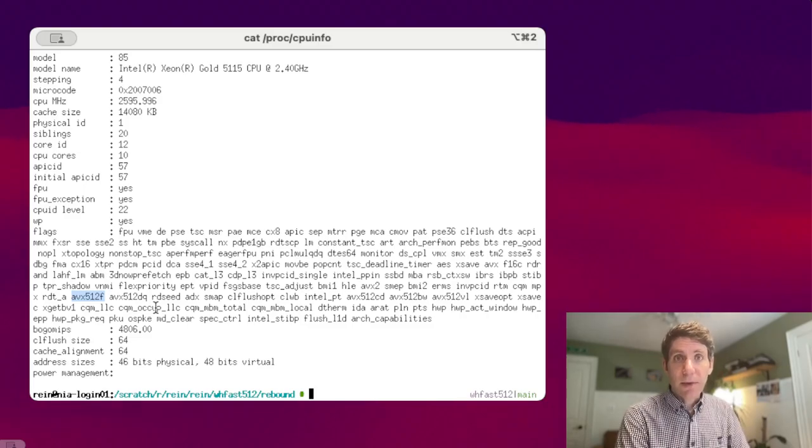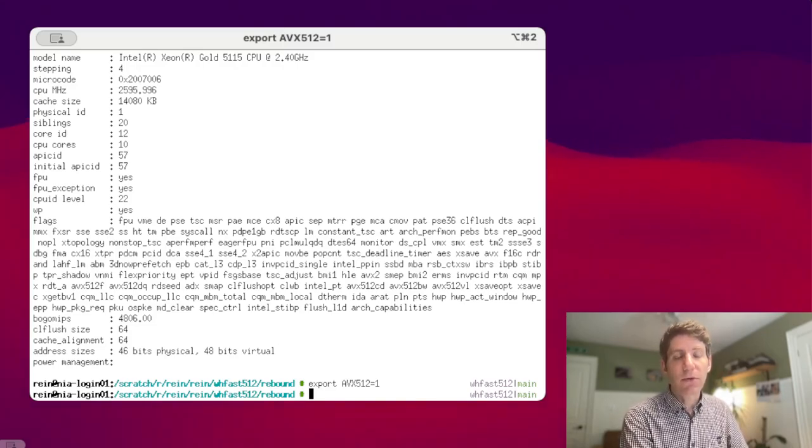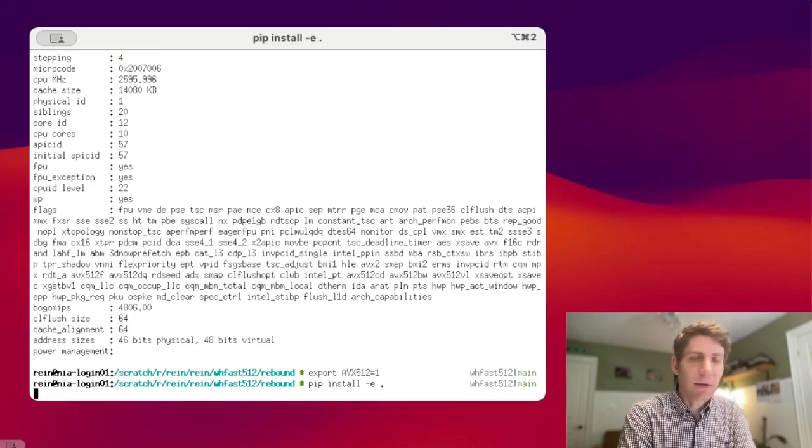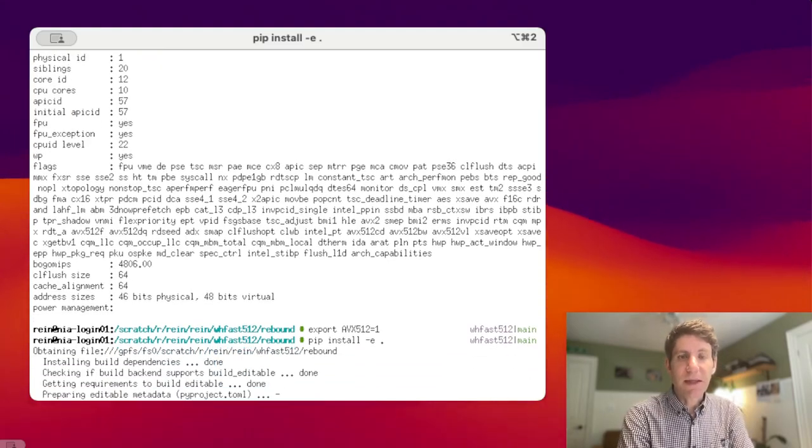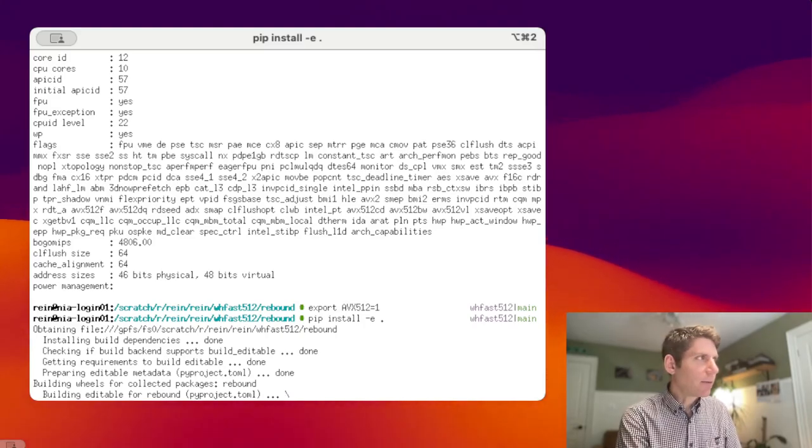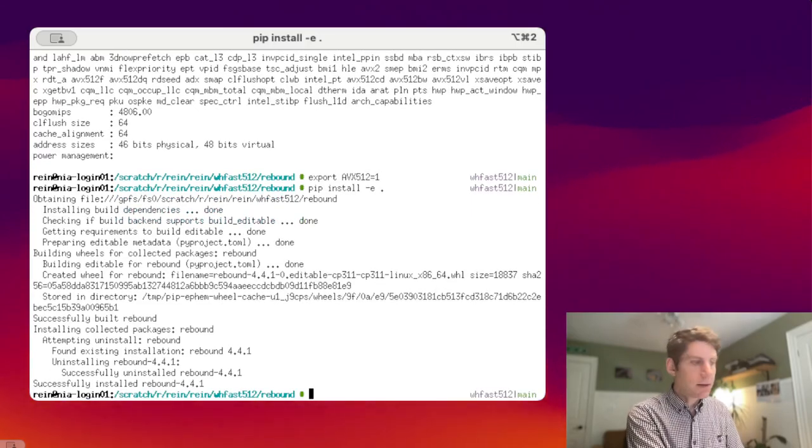If you find a flag that says AVX-512, like this one over here, then you're most likely able to run WHFAST-512 on this computer. The first thing, if you want to compile Rebound with AVX-512 support is to set the environment variable AVX512 equal to 1. And by default, this is set to zero. So you will not have these AVX-512 instructions. Once you have that, you can install Rebound. You need to install it from a local copy, for example, using pip install to install within the Python framework. I'll show you later how to use it from C. It will take a second to compile.